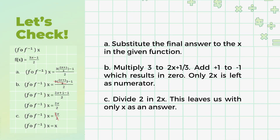Let's figure out if our answer is correct. Substitute the final answer to the x in the given function. Multiply 3 by (2x plus 1) over 3 by canceling out the common factor 3. Now we have 2x plus 1 minus 1 as the numerator. Adding positive 1 to negative 1 results in 0, so only 2x is left as the numerator. x is equal to x — therefore, our answer is correct. Dividing 2 into 2x leaves us with only x. Since x is equal to x, we can say that our answer is correct.